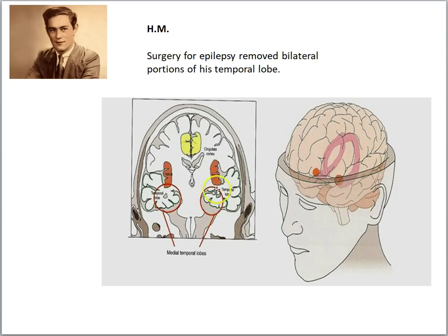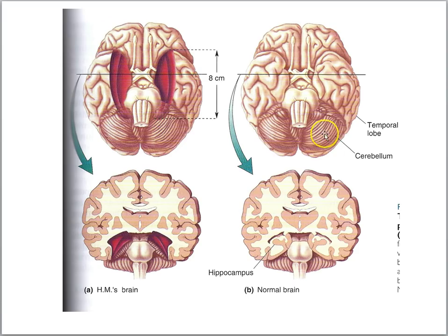Here we see a cross-section of the human brain. The medial temporal lobe is down here with the underlying structure called the hippocampus. Surgeons removed this part of the brain. In this brain we can see that the pink structure would be the hippocampus on both sides — there's a left and a right — underneath the temporal lobes.